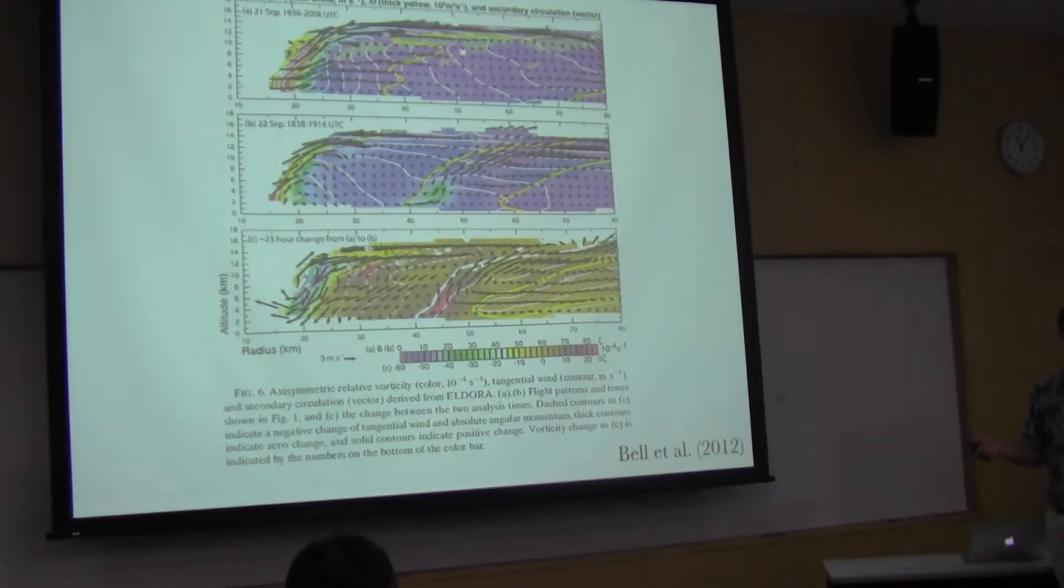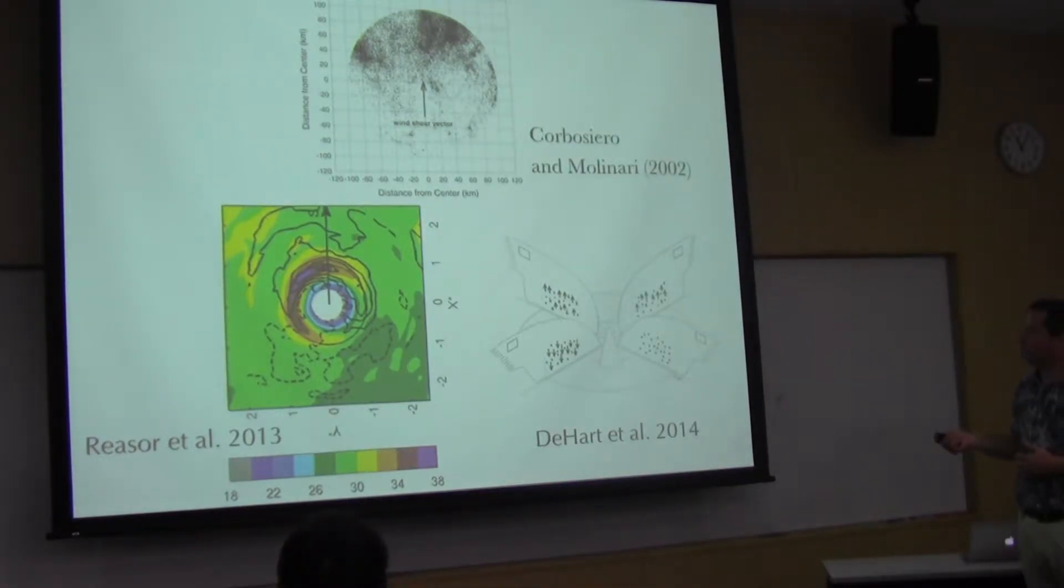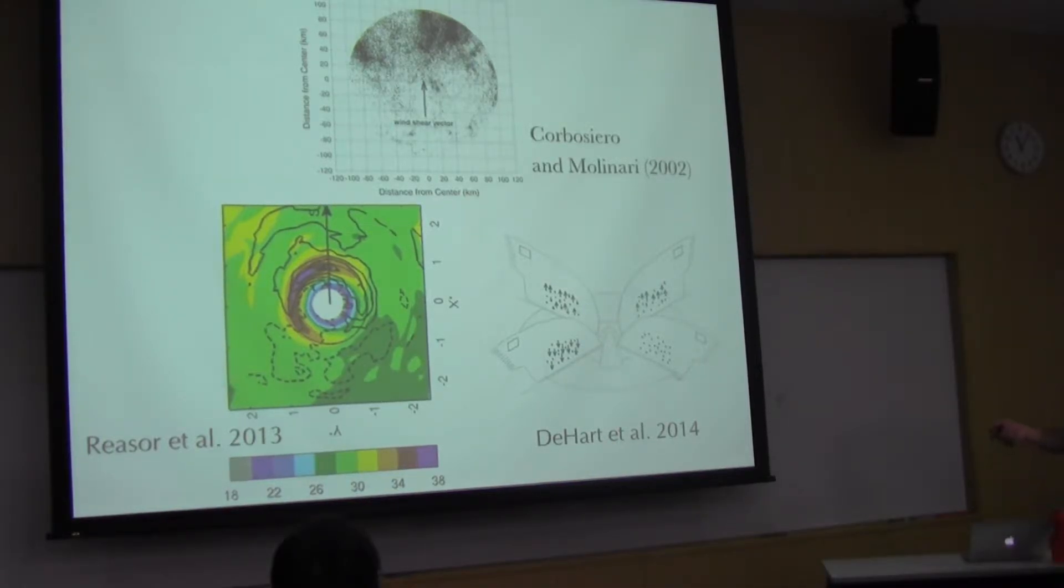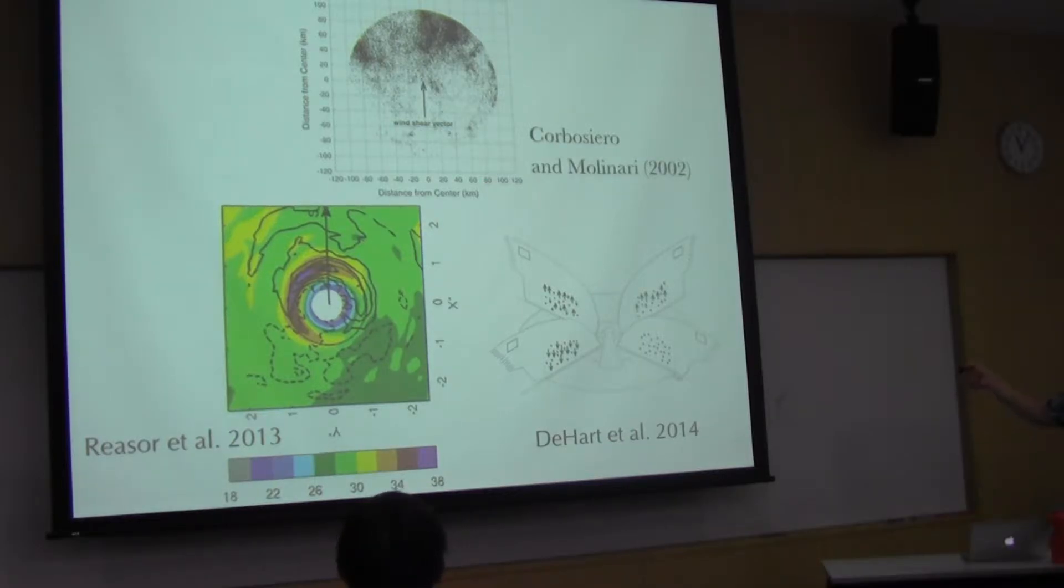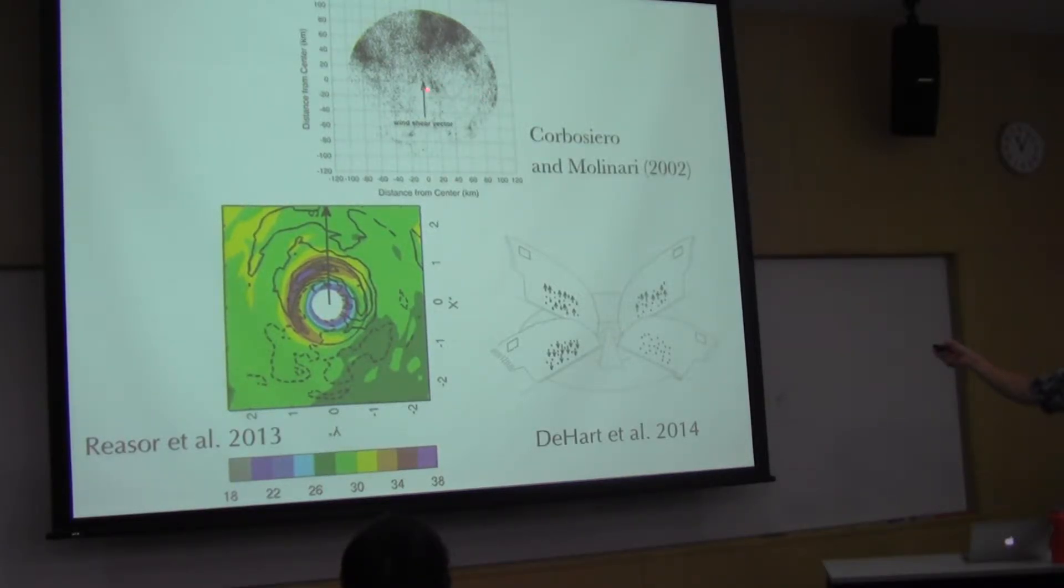Any other questions about secondary eyewalls before we go to asymmetric? Well then, let's talk about asymmetric. I did cover this some on Wednesday, so I'll go through some of this a little more quickly. But I do want to talk about how we've been able to make some nice advances about the asymmetric structure with airborne Doppler radar. I picked three studies here: Corbosiero and Molinari 2002 - Kristen Corbosiero at SUNY Albany did some really classic work on looking at the asymmetric structure as a result of wind shear.